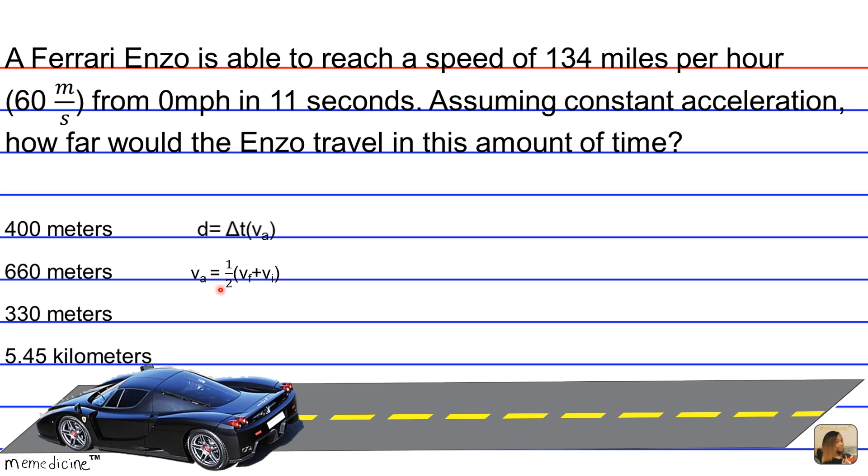To calculate v_a, we can simply use v_a = ½(v_f + v_i), where v_f represents our final velocity and v_i is our initial velocity.